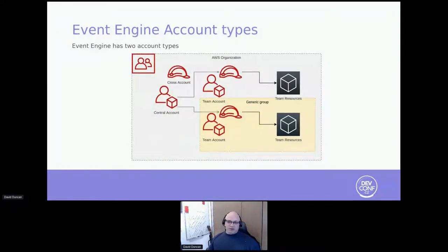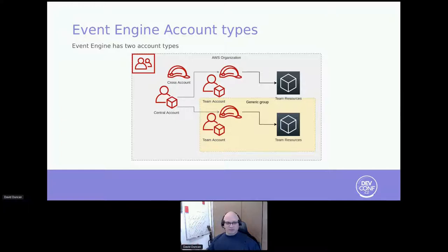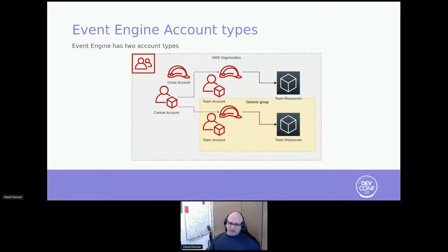An event engine creates for any event an AWS organization and an AWS account structure. In that account structure there is a single account for an event called the central account. The central account has access to all of the team accounts. Each one of the individual team accounts has resources, and the central account through cross-account access is able to manage and make modifications to the team resources.